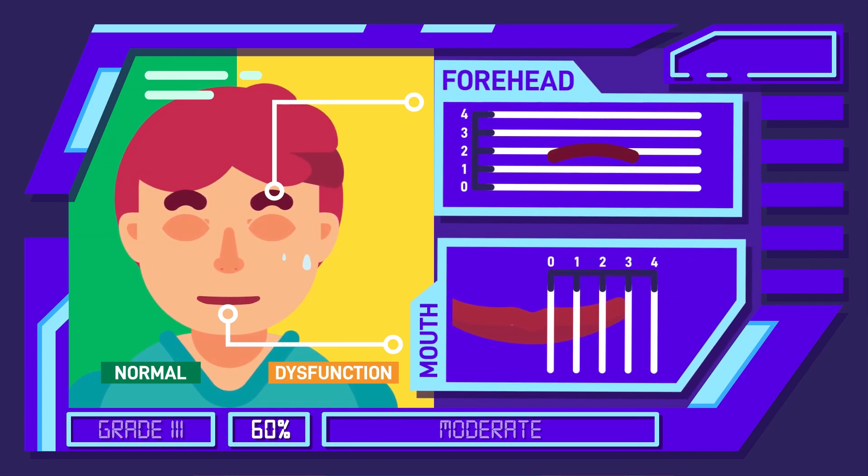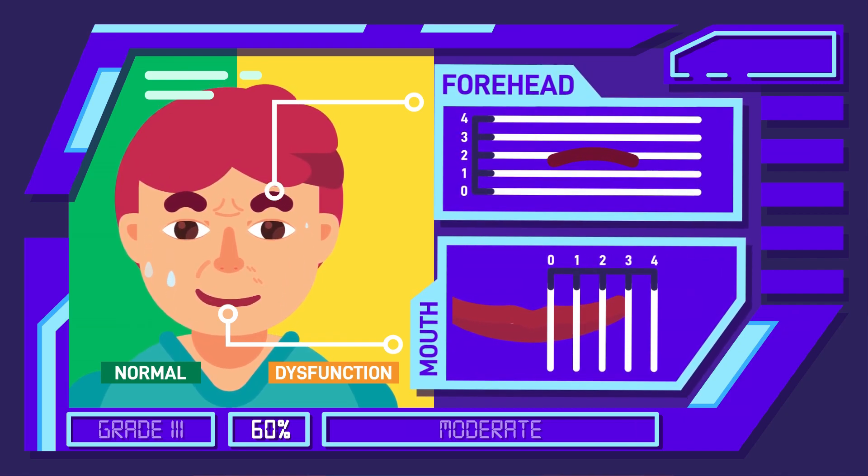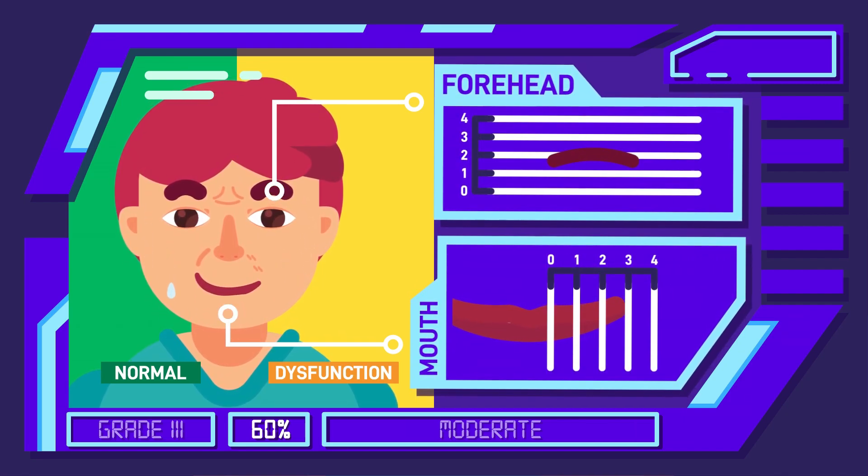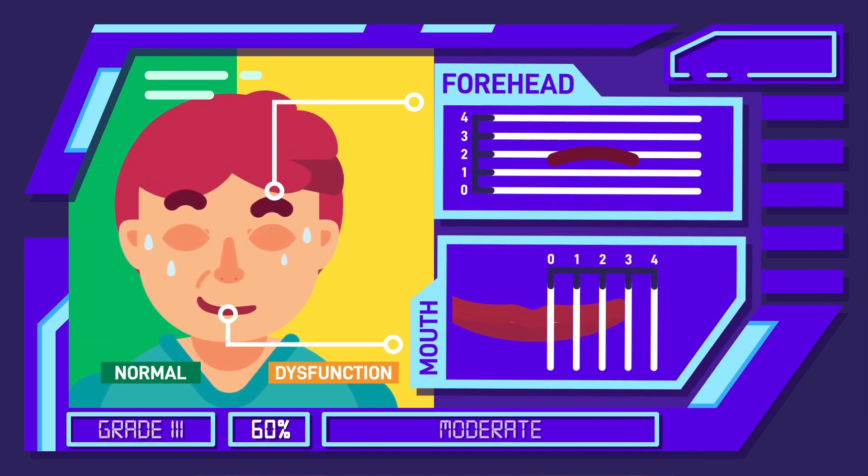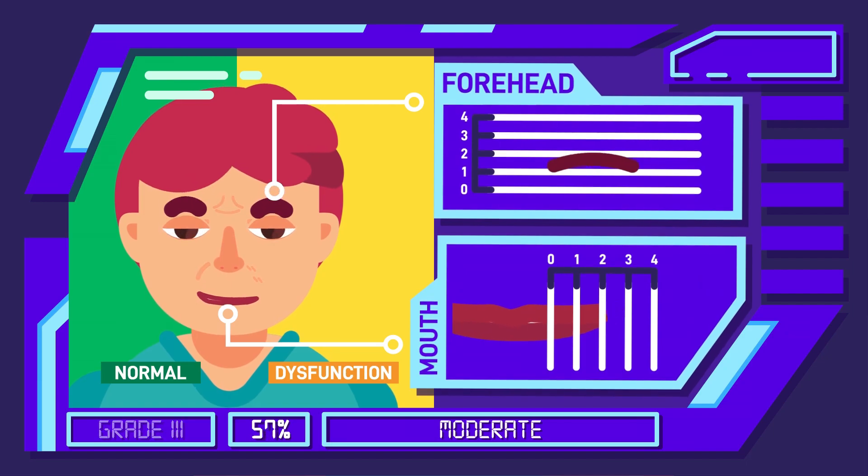Similarly, their eyes can only be closed completely with higher effort and the synkinesis becomes more obvious. All in all, there is a clear but not disfiguring difference on both sides of the face when moving.